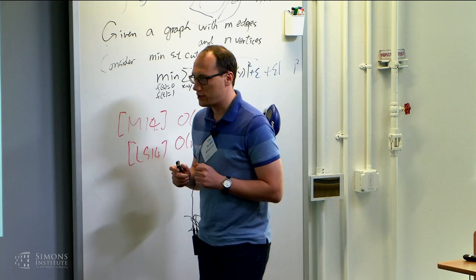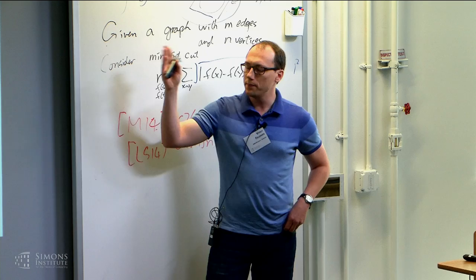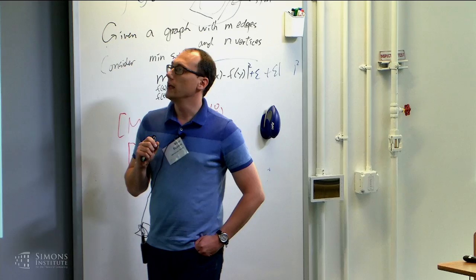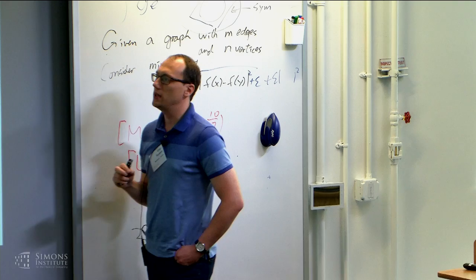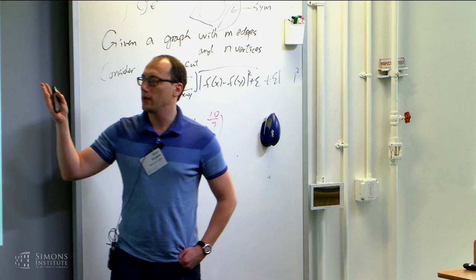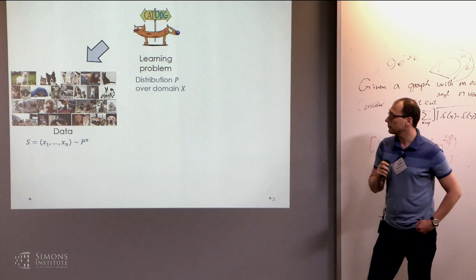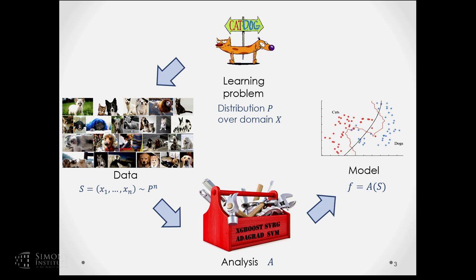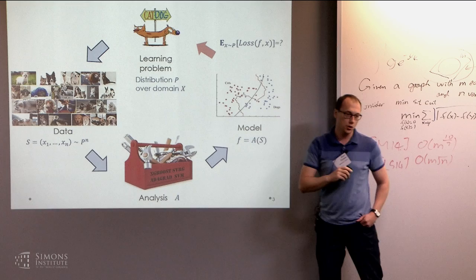Let's start with motivation. We'll be looking at the standard statistical setting of learning from data, in which we have some learning problem described by some unknown distribution P over some domain X. Our input is some dataset which consists of N points drawn IID from that distribution. We run our favorite analysis on this data and obtain some model.